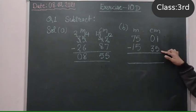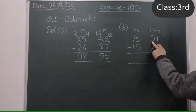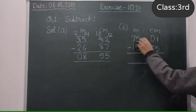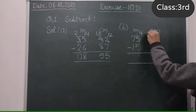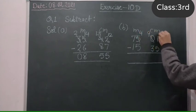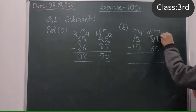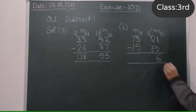Here 1 is less than 5, so we will take carry. It is 0, so we will take carry from here. It becomes 4, and it becomes 9, and it becomes 11. 11 minus 5 is 6, and 9 minus 3 is 6.